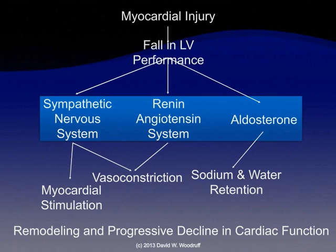The sympathetic nervous system is going to stimulate the myocardium and cause an increase in the patient's heart rate. It also causes vasoconstriction along with the renin-angiotensin system. The aldosterone system is going to cause sodium and water retention.